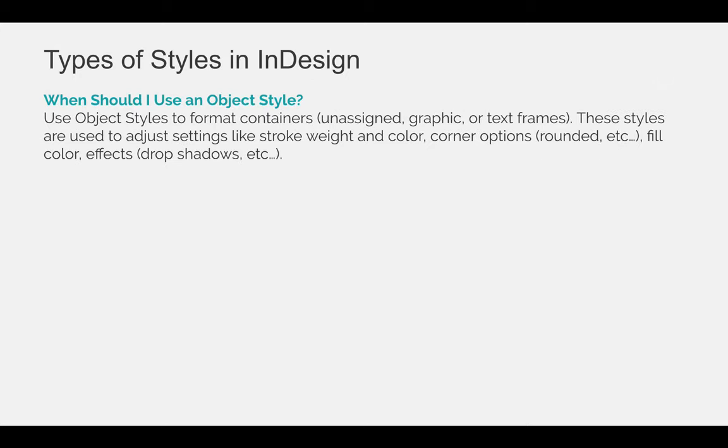Let's start with object styles. When should you use an object style? Use object styles to format containers — so unassigned frames, graphic frames, or even text frames — but you are going to format the frame itself, not the content inside the frame. These styles are used to adjust settings like the stroke or the weight of the stroke and the color of the stroke on the outside of the frame, corner options such as rounded or beveled, fill color, effects like drop shadows, and things like that.